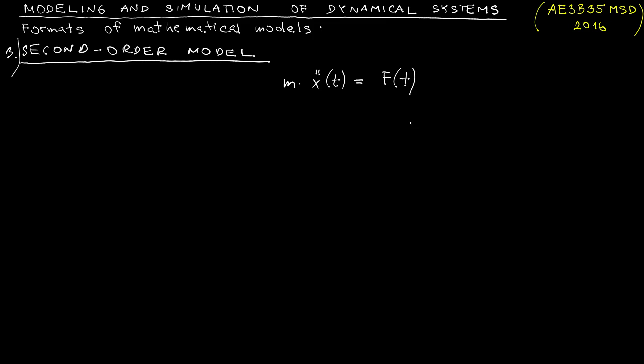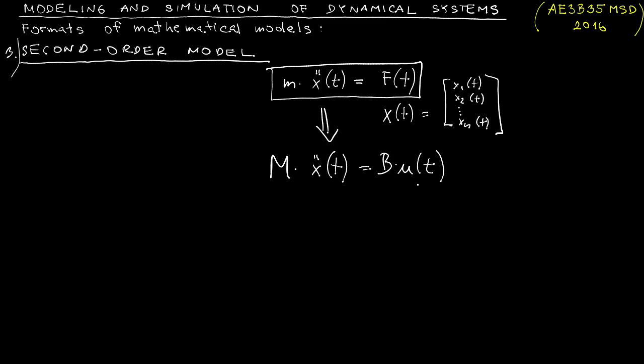In this case we will consider a system consisting of several masses, so we will have several variables describing the position x1 through xn. Therefore the original description now extends to a matrix vector description, where instead of a single scalar mass we have a matrix of masses.